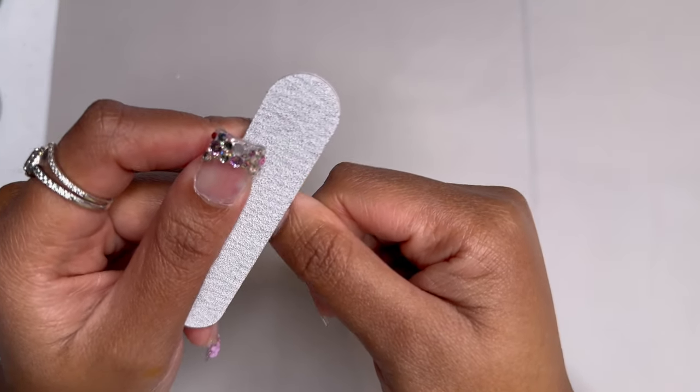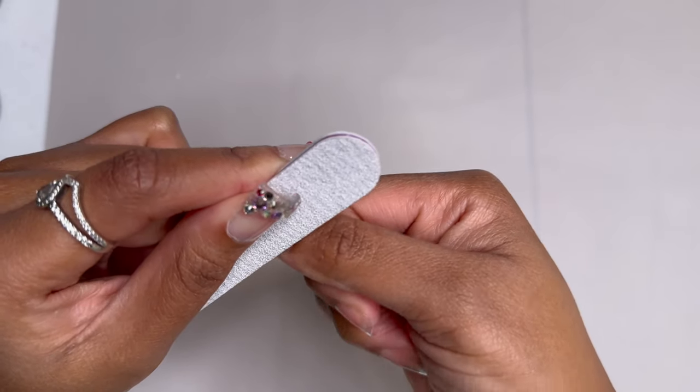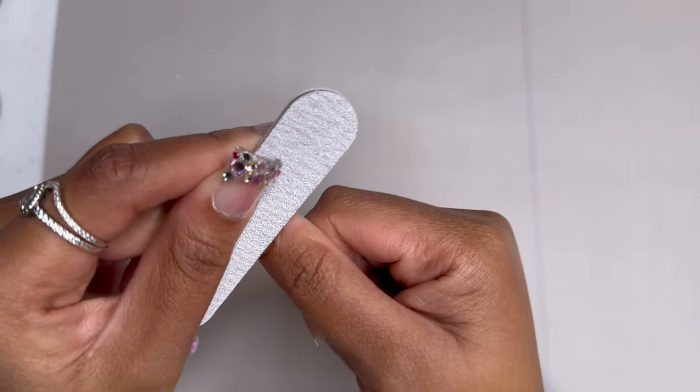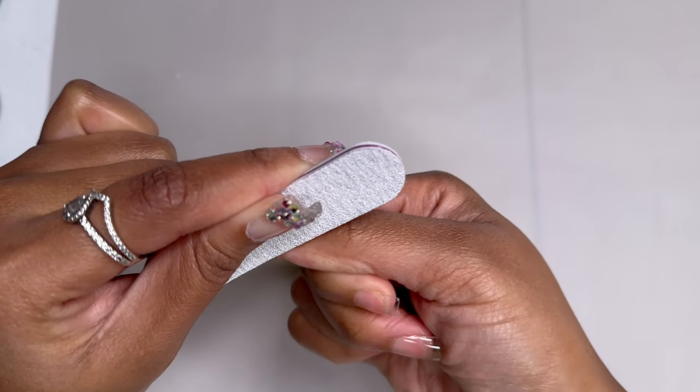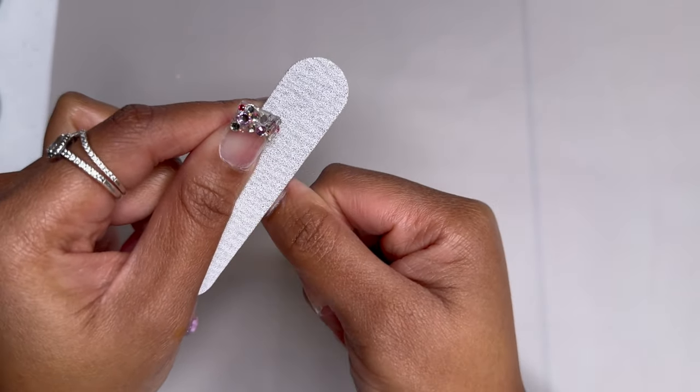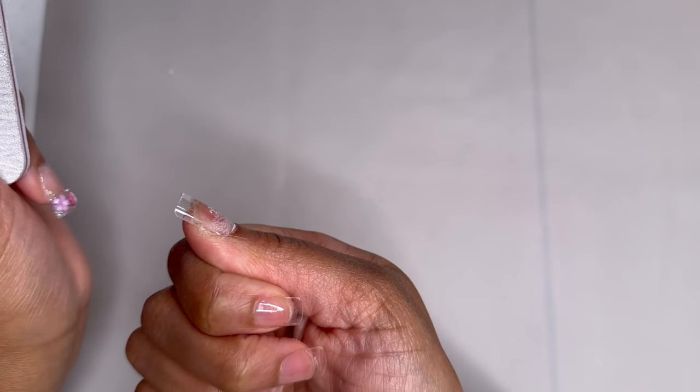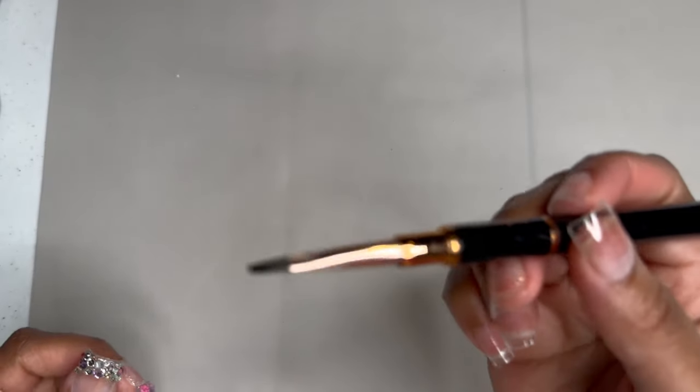The purpose of this step is to seal your cuticle so we're not allowing any bacteria to get in and it also creates a very natural look. With this step we are just taking the file and going around our cuticle area to blend in the full cover tip with our natural nail.